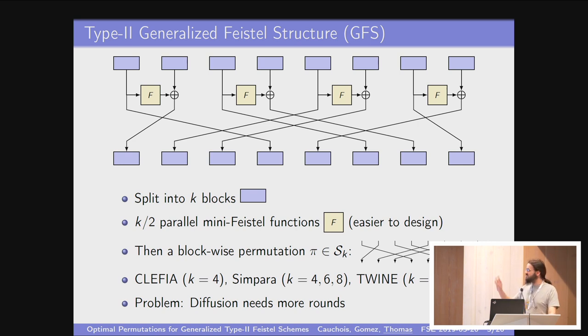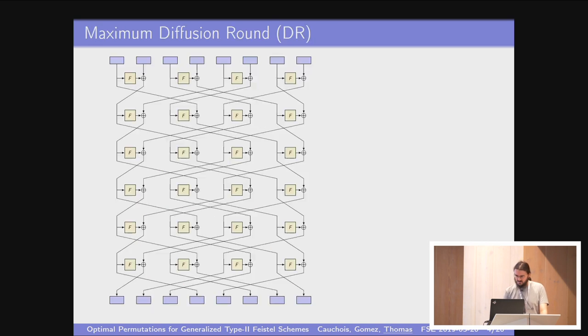But the problem with this construction is how many rounds do you have to do before you have some kind of diffusion. What do I mean by diffusion? I'm talking about what's called maximum diffusion round. Basically, you look at the first block and you follow the different arrows, and you count how many blocks you have influenced after a certain number of rounds. After one round, you have influenced two blocks, then three, then five, then seven. Here, after five rounds, you've influenced every block.